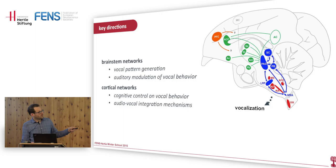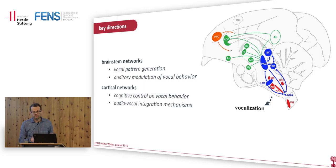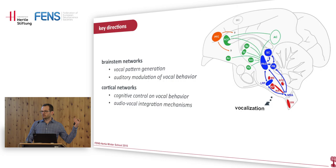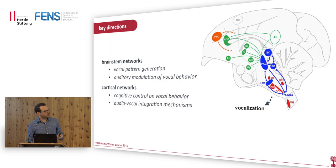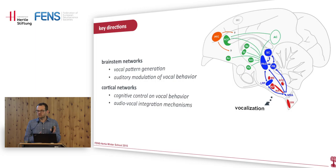No cortex is needed for vocal pattern generation. Now in the rest of the first lecture I'll talk about brainstem networks — and you'll see that even brainstem networks are interesting from the perspective of human speech. First, the vocal pattern generator and how it likely produces vocal utterances. Second, auditory modulation of vocal behavior — there are several audio-vocal effects in humans that are also present in other mammals, which may make you reconsider whether these effects are cortically controlled or brainstem-controlled.